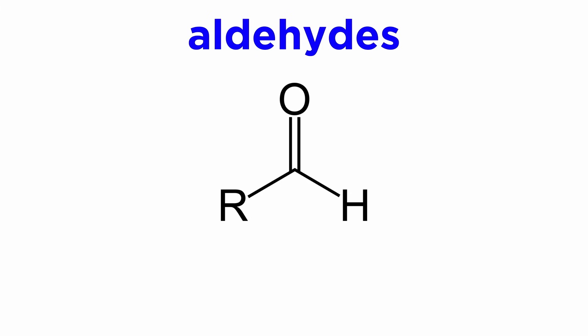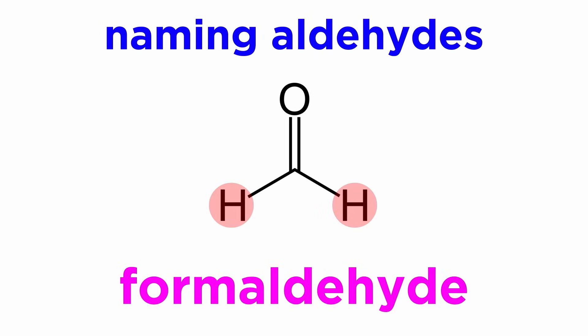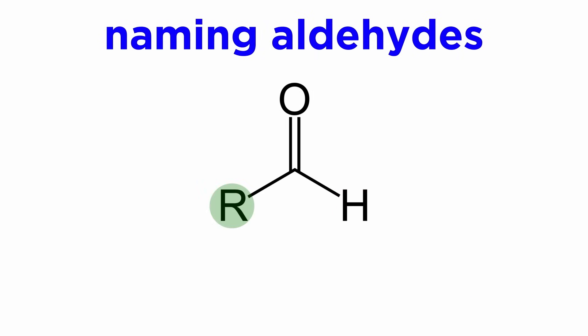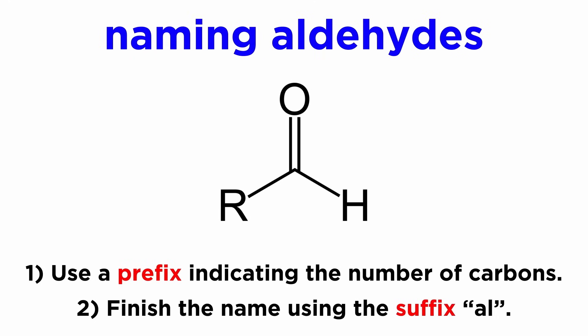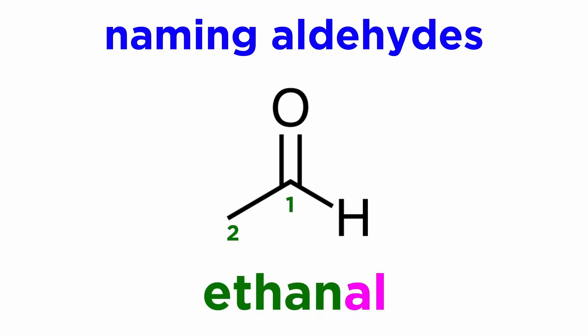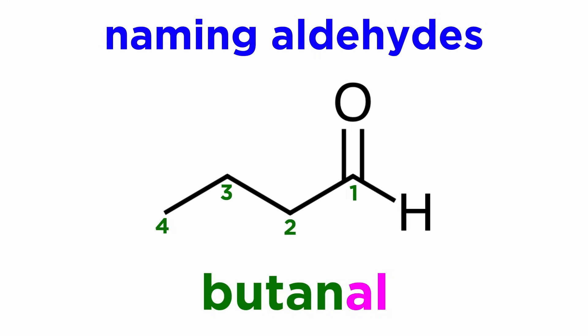First, let's start with the aldehyde. This involves at least one hydrogen to one side of the carbonyl. Typically there will be alkyl on the other side, but having hydrogens on both sides will also result in an aldehyde, commonly referred to as formaldehyde. Assuming we have alkyl to one side, we simply use a prefix that specifies the number of carbons in the molecule, and then use the suffix -al for aldehyde. So this would be ethanal, this is propanal, and this is butanal.